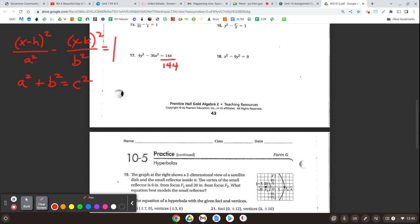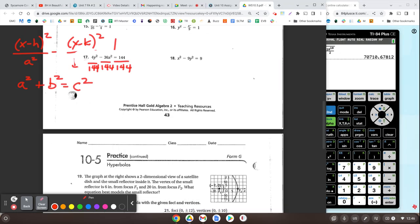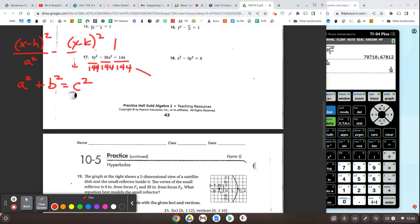I'd like to show this calculator trick for people that might have a hard time simplifying fractions. If I wanted to do 4 over 144 and get that as a simplified fraction... The best way is, and you're going to use this same feature a lot, alpha y equals enter. If you just type in 4 divided by 144, it'll simplify it for you. 1 over 36.